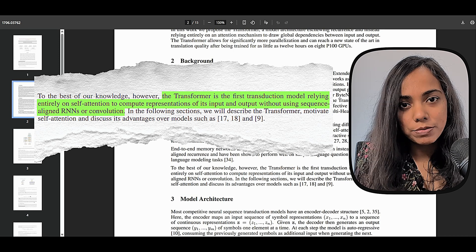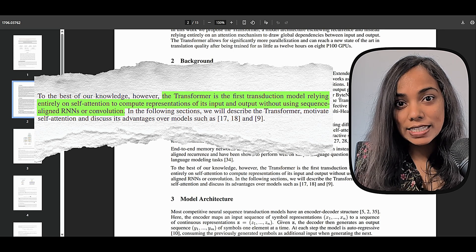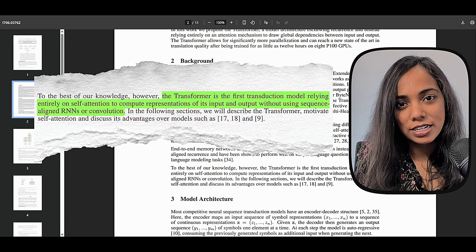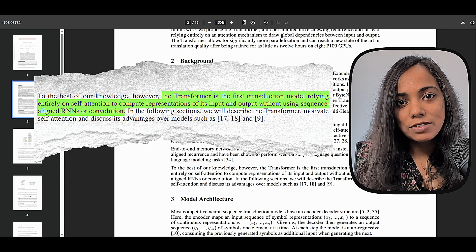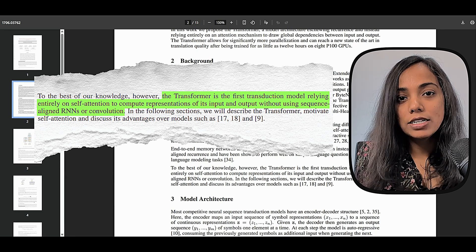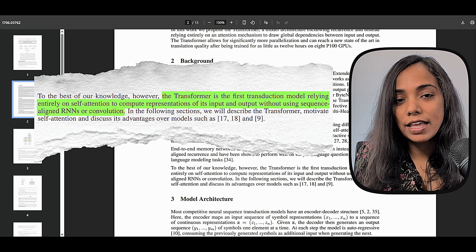Transformers fixed both these problems. They read entire sentences in parallel, speeding up the processing dramatically, and easily connected words that were far apart, understanding context better than ever before.